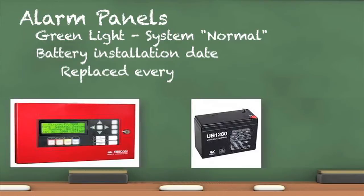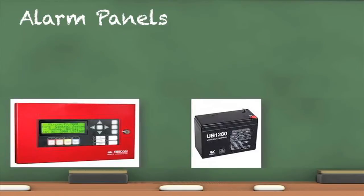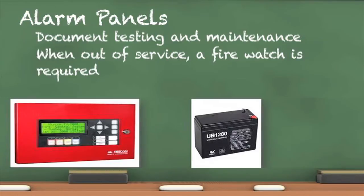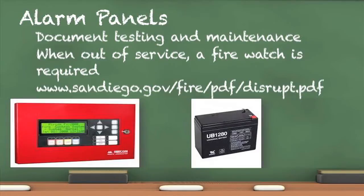Batteries must be replaced every 5 years. Documentation of weekly, quarterly, semi-annual, and annual testing and maintenance of the alarm system is required. If the alarm is out of service, a fire watch is required. The policy and instructions for a fire watch can be found on the San Diego Fire Rescue Department website.